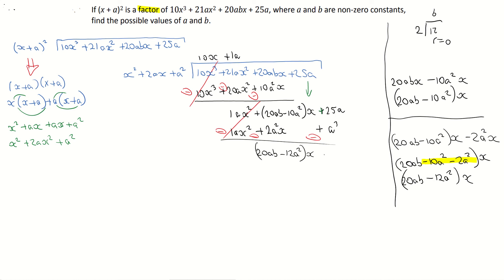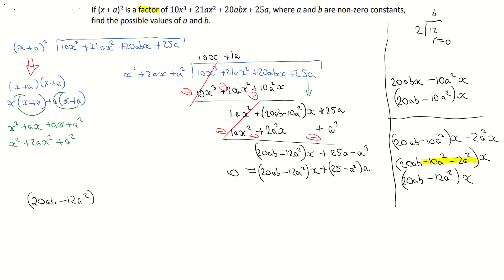Coming back to my constants, I have a positive 25a minus a cubed. I can factorize out an a, so that's the same as 25 minus a squared all times a. Putting it back together with 20ab minus 12a squared, that's our long division done. We now know that the remainder should be 0 because it tells us it's a factor, so we must have remainder 0.